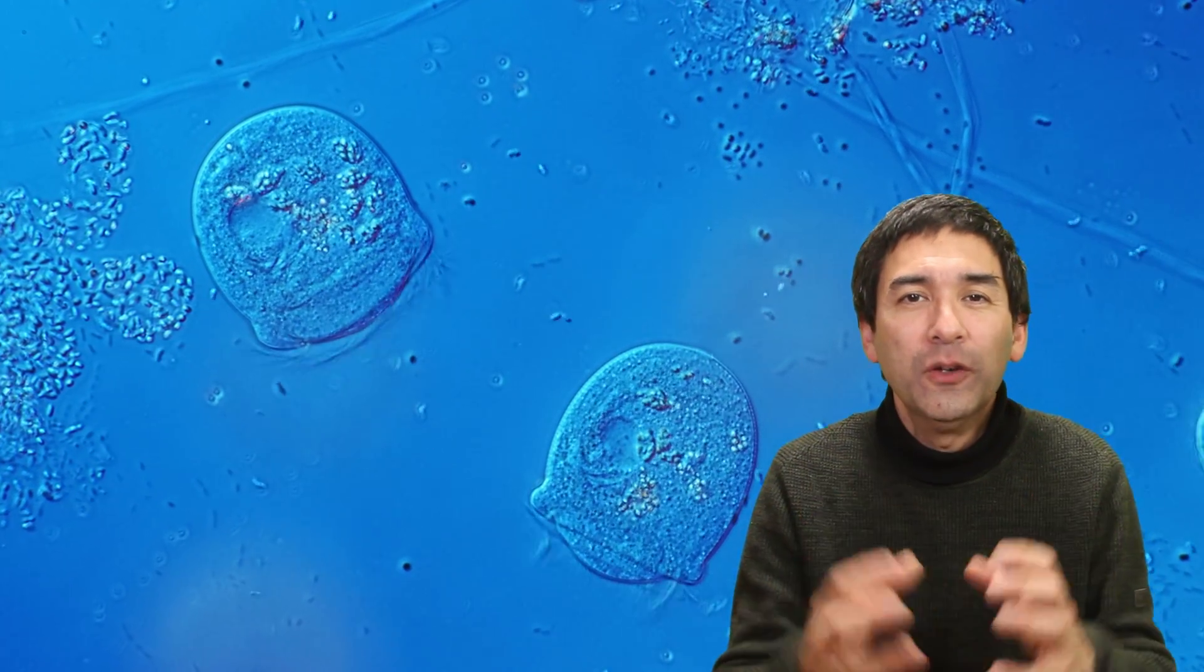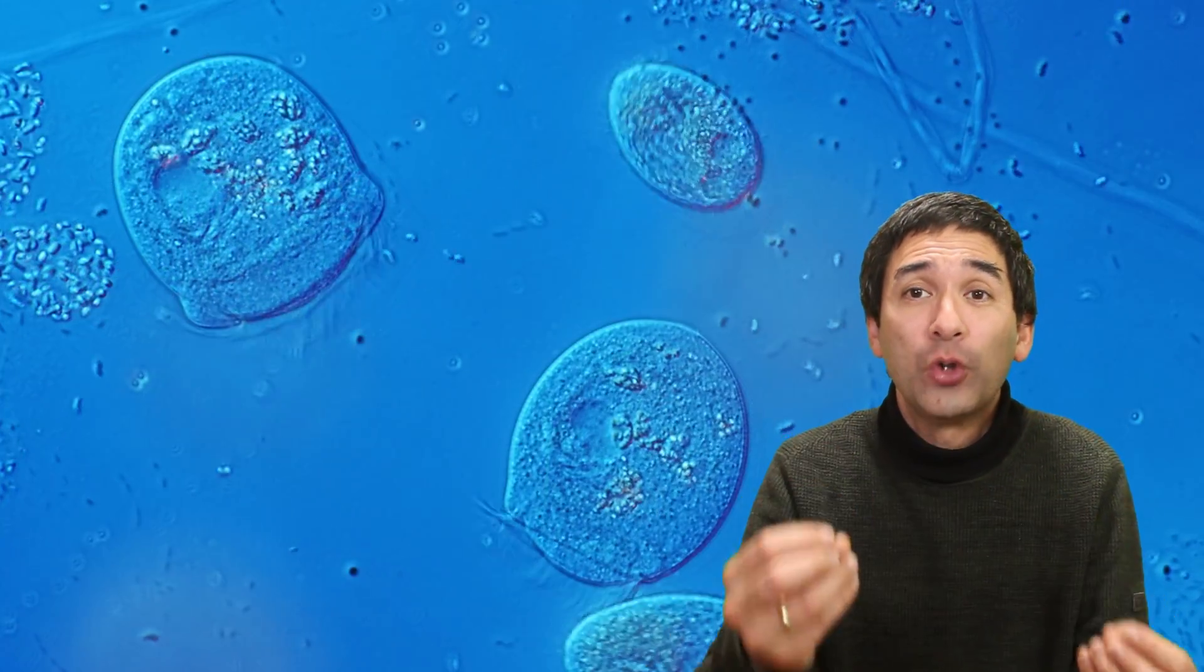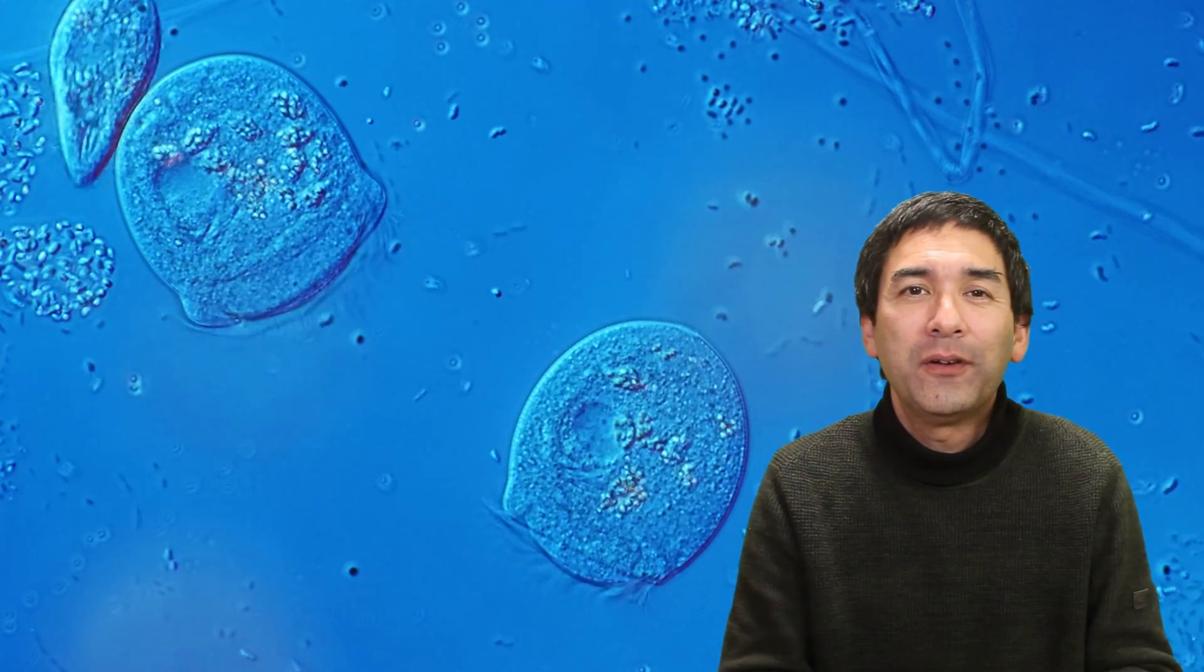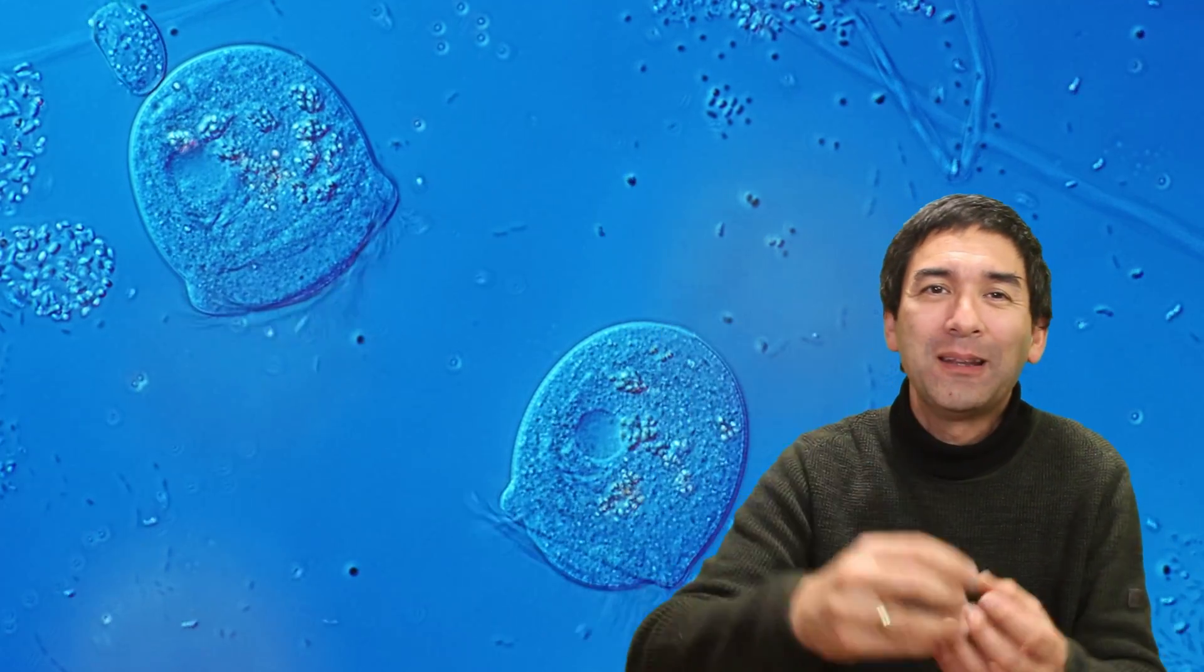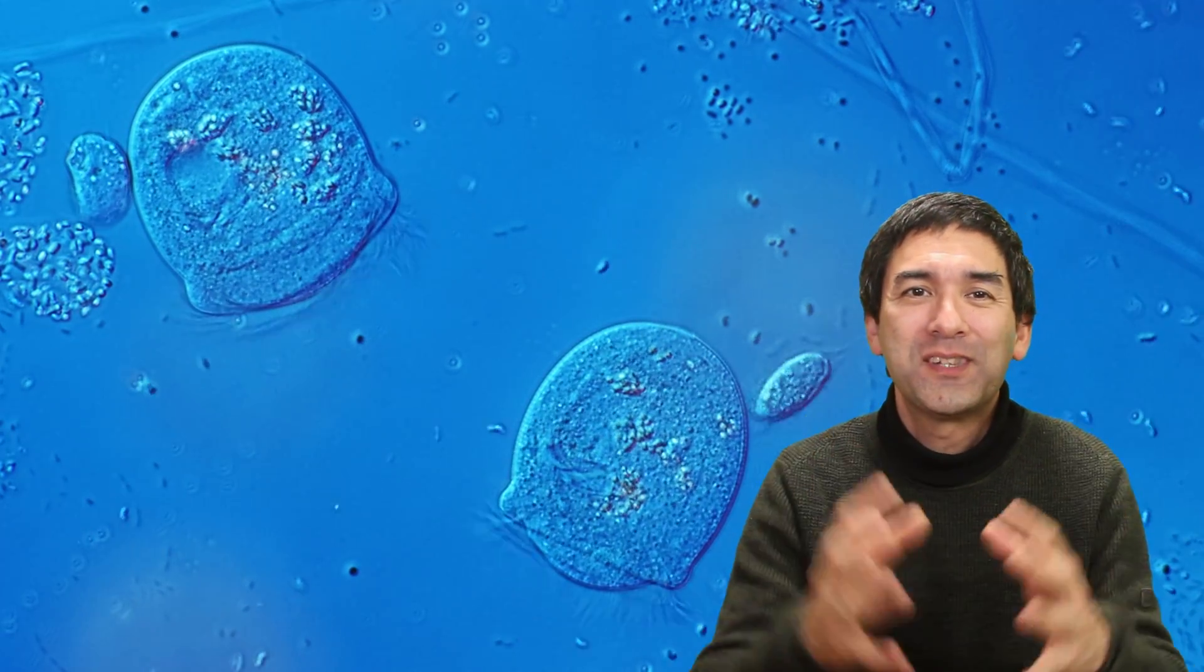When the swarmer finds a suitable surface to attach to, it forms a stalk. It grows a stalk which anchors it in place. And then we're there again, right at the beginning of the video where you can see that this stalk is able to contract rapidly for the protection of the cell.